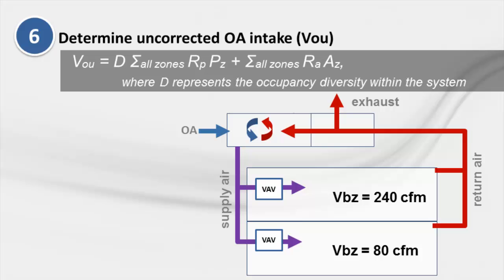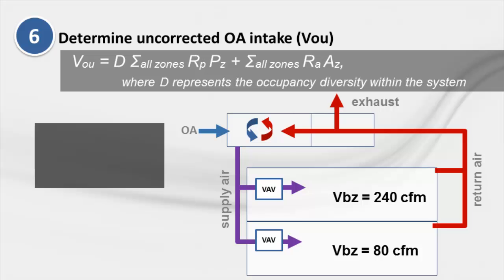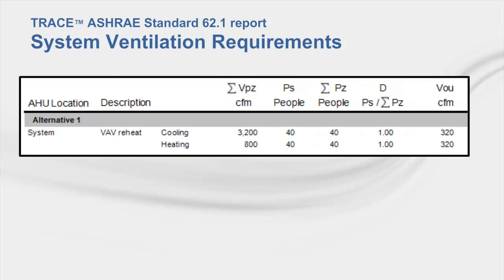In equation 6-6, the variable D represents occupant diversity, which can be entered into TRACE in the Advanced window within Create Systems in the population diversity input. Assuming occupant diversity equal to 1, V sub OU equals the sum of the breathing zone air flow rates, which is 320 CFM. The TRACE report shows the uncorrected outdoor air intake flow, V sub OU, for the system in the System Ventilation Requirements section.